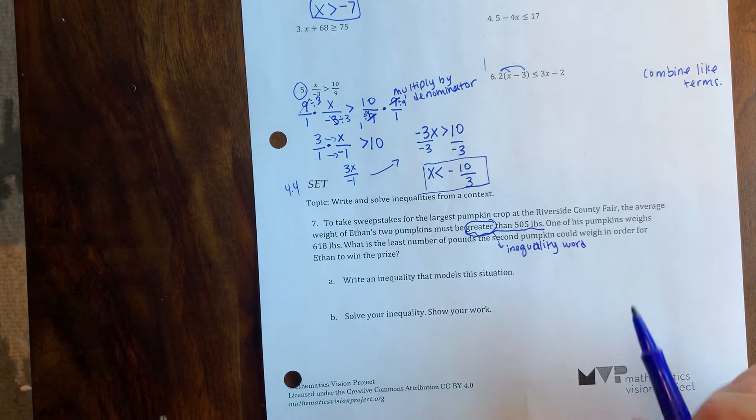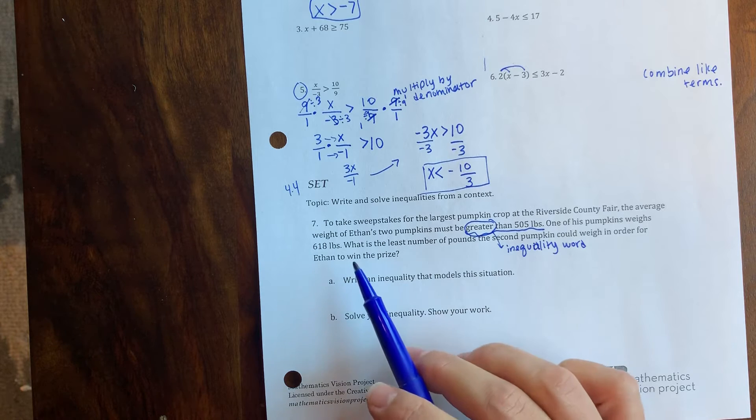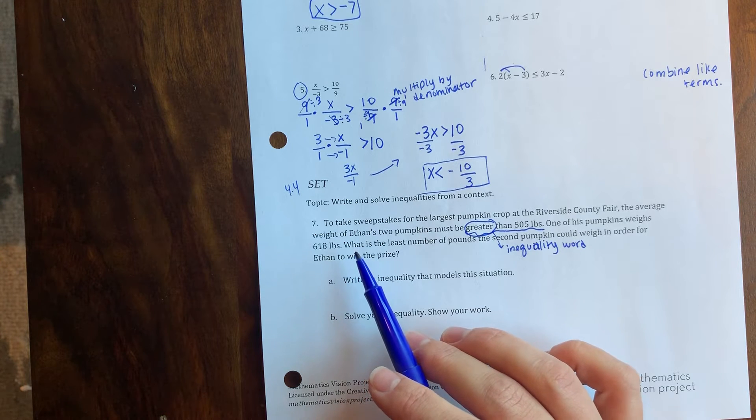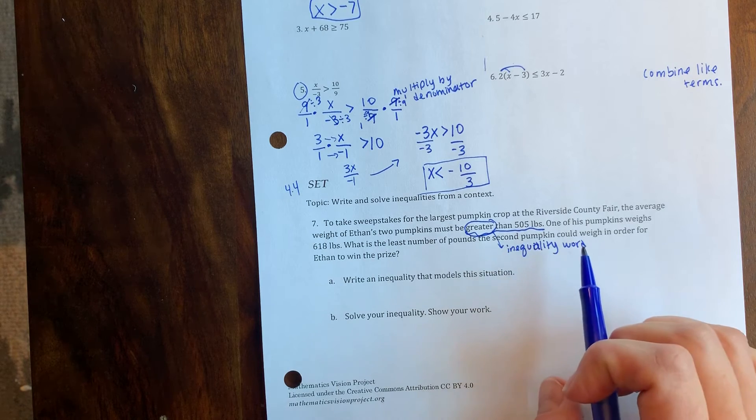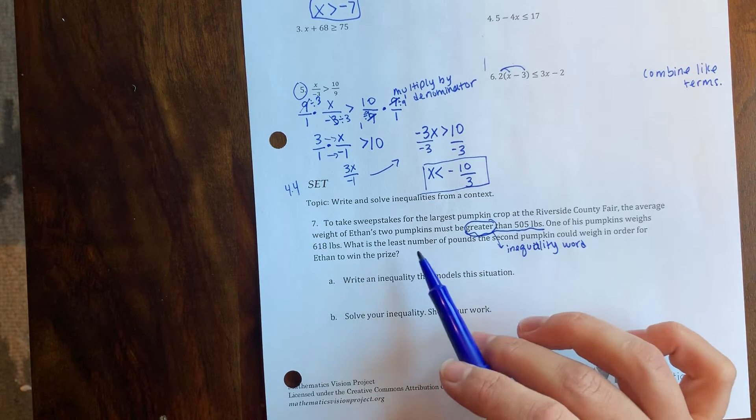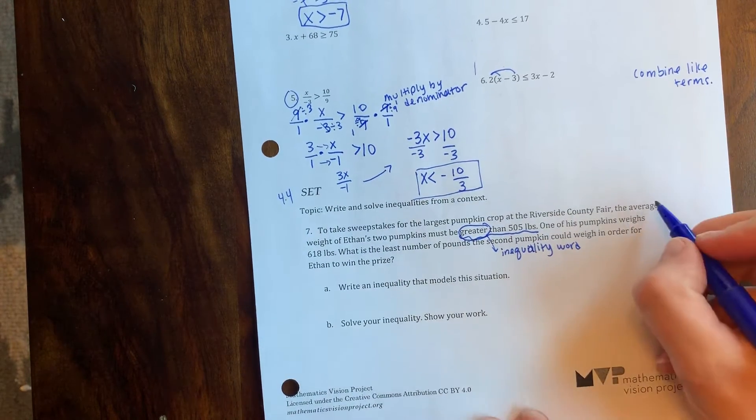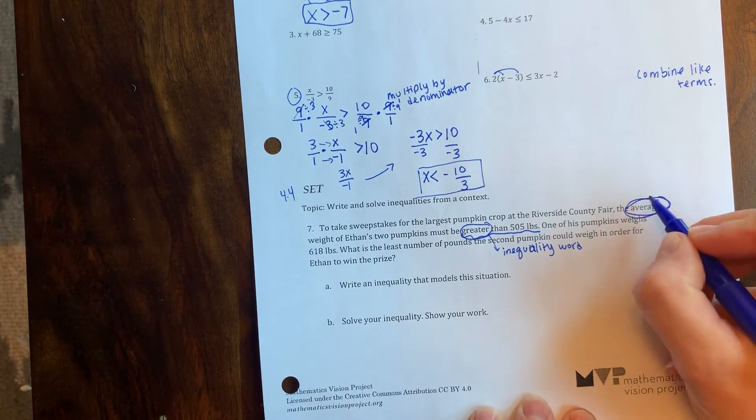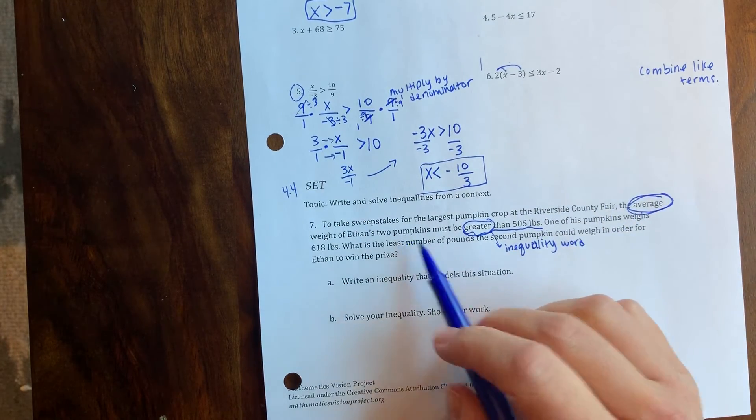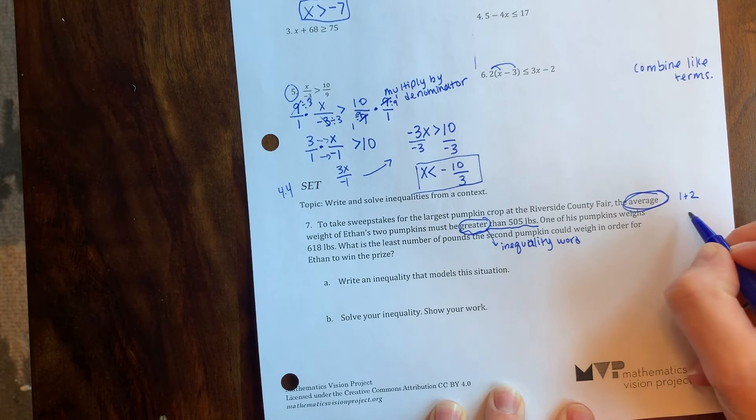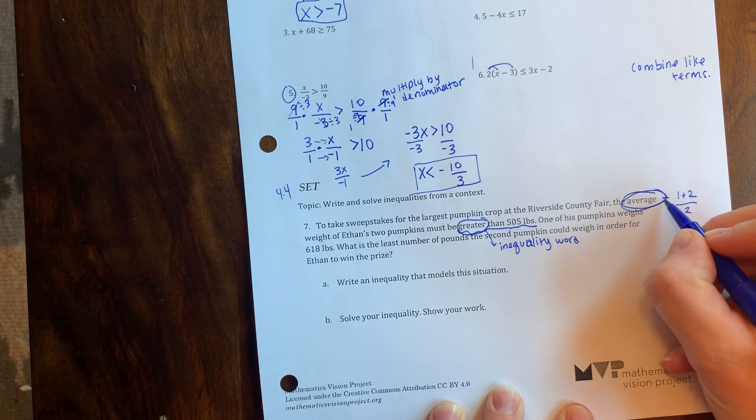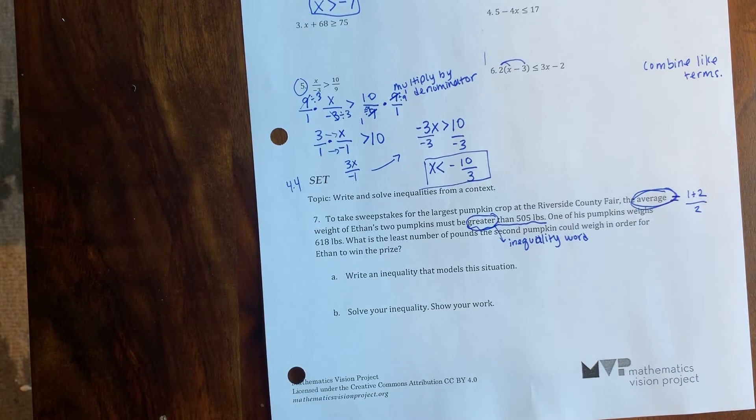One of his pumpkins weighs 618 pounds. What is the least number of pounds the second pumpkin could weigh in order for Ethan to win the prize? Right here I have average. Remember, we're averaging two pumpkins, so I need the weight of two pumpkins and I'm gonna divide that by two. That's how you take the average of something.